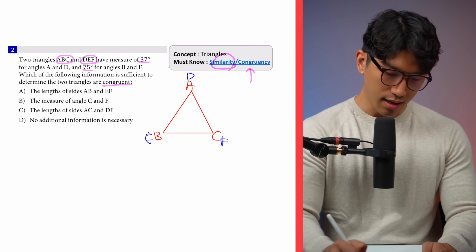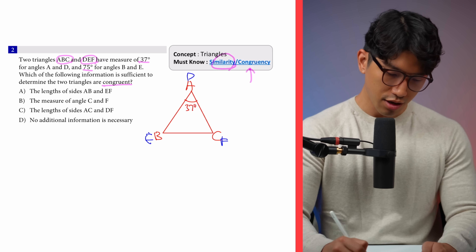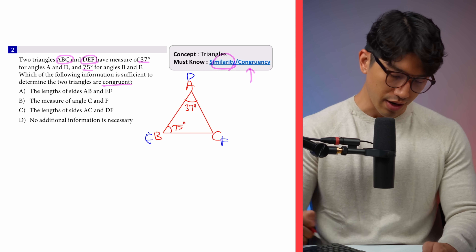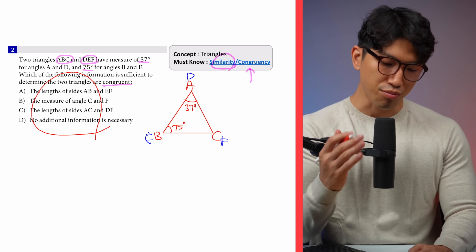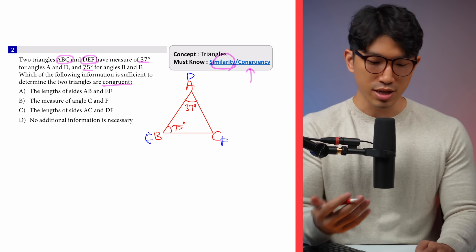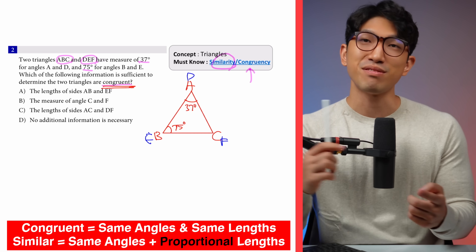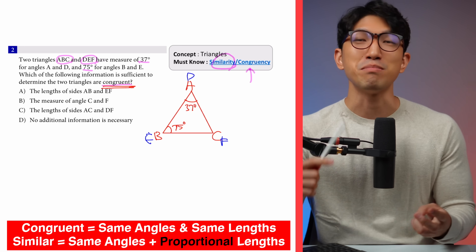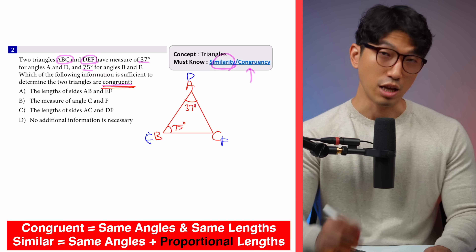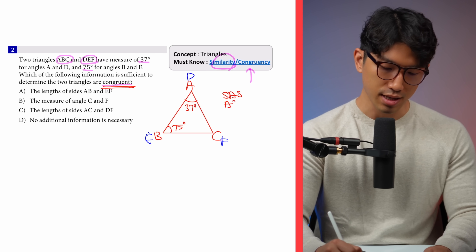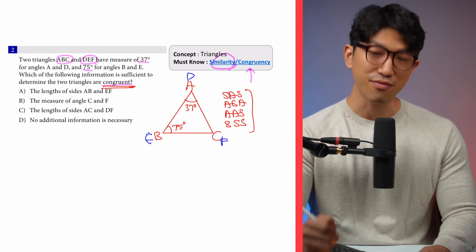We know angle A and D measure 37 degrees, and angle B and E measure 75 degrees. The question asks which of the following is enough to prove the two triangles are congruent. Congruent triangles are identical — they have the same set of angles and same length for all three sides. You want to memorize the four congruency requirements: side-angle-side (SAS), angle-side-angle (ASA), angle-angle-side (AAS), and side-side-side (SSS). If you know one of these four, the two triangles are congruent.